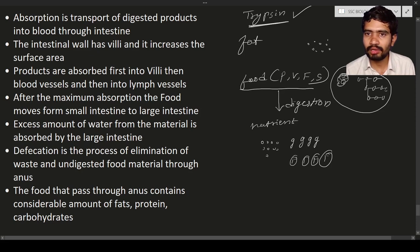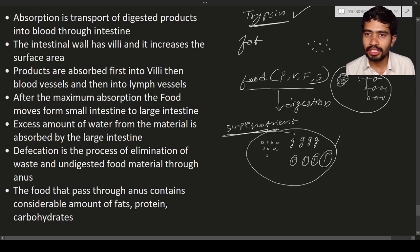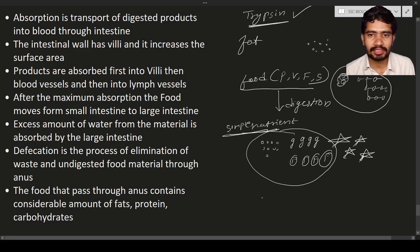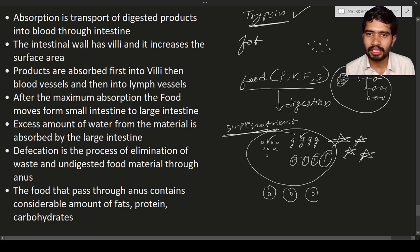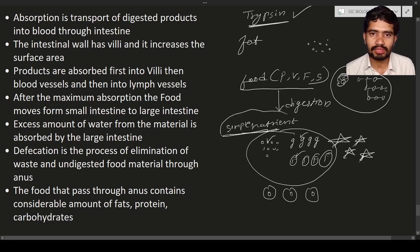The breakdown of complex food materials into simple nutrients is known as digestion. After digestion is complete, nutrients are formed. These nutrients — amino acids, sugars like glucose and maltose, fatty acids, and minerals — are essential for building cells and for the growth and development of the body.